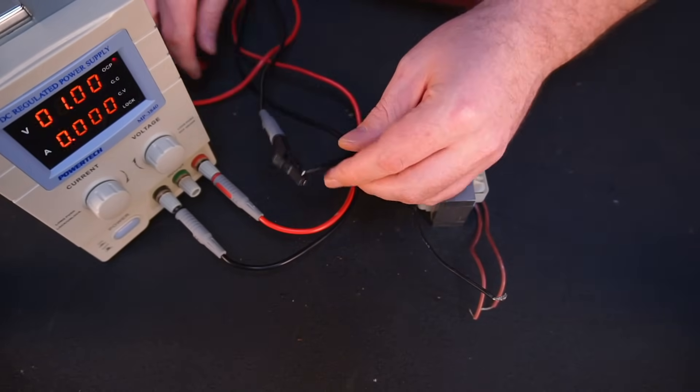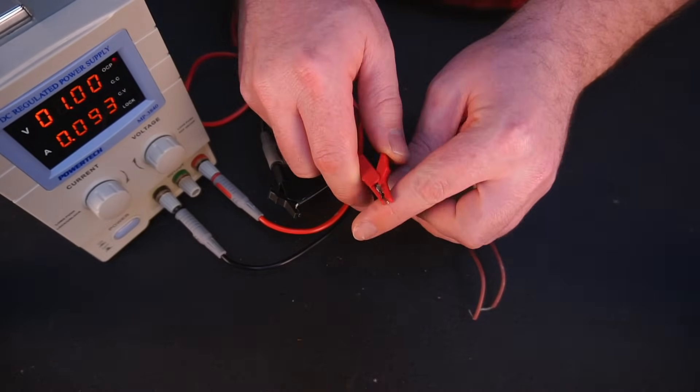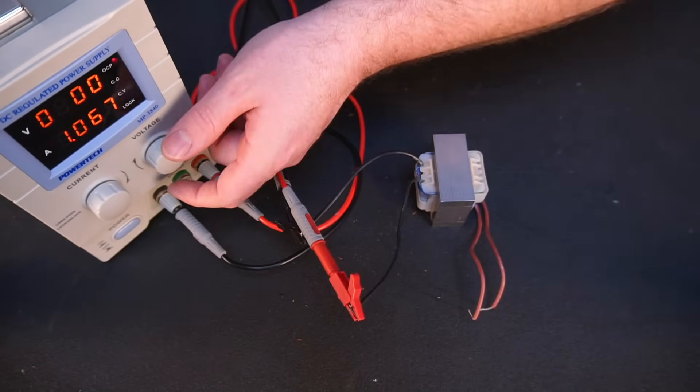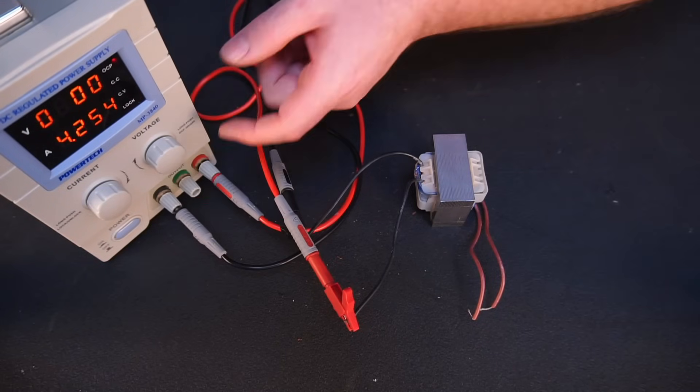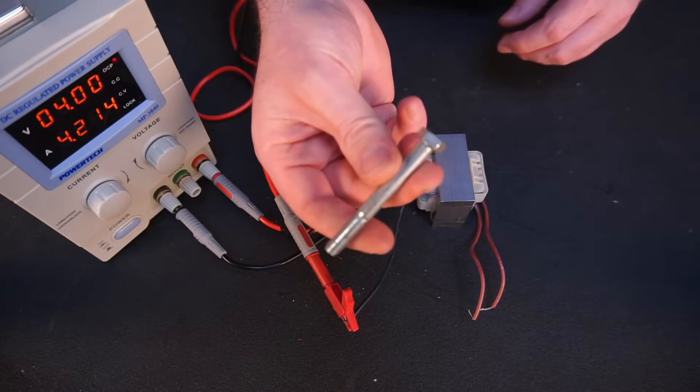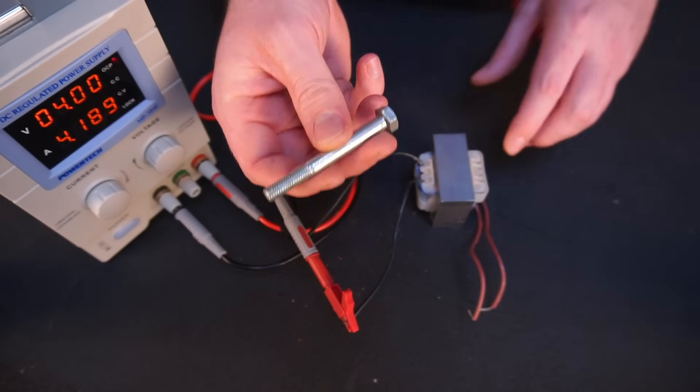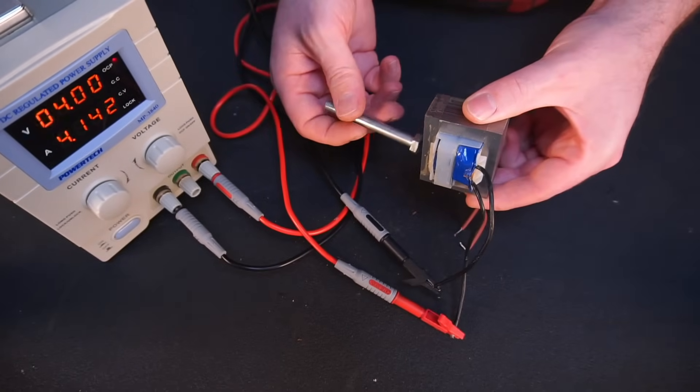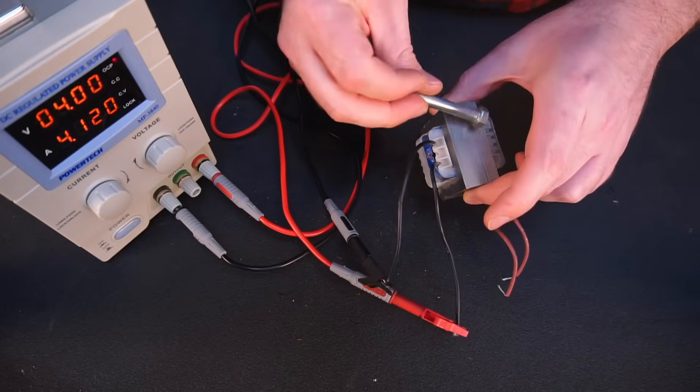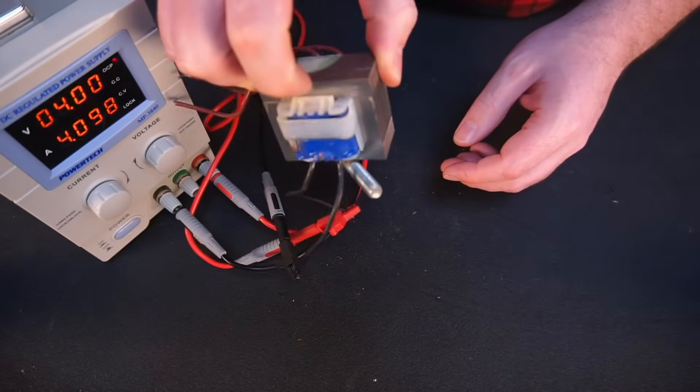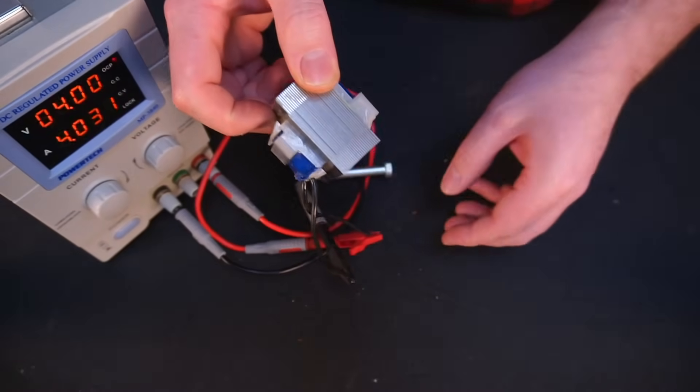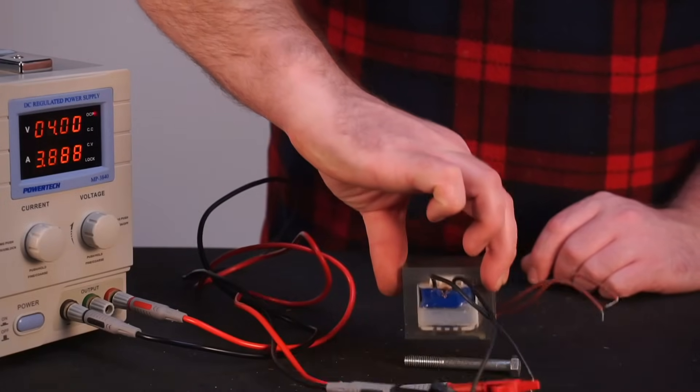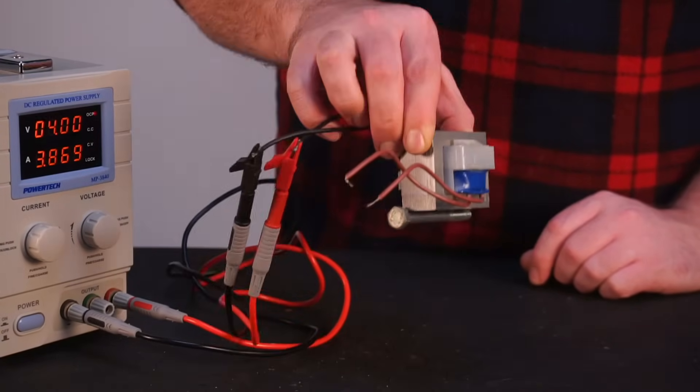Before I start modifying the transformer, I connected it up to my power supply and pushed 4 amps through the winding. I wasn't expecting the magnetic force to be powerful and sure enough it wasn't. The magnetic field was barely strong enough to pick up the steel bolt.